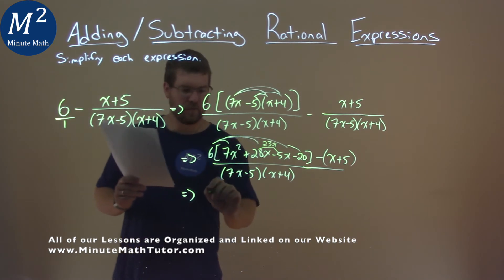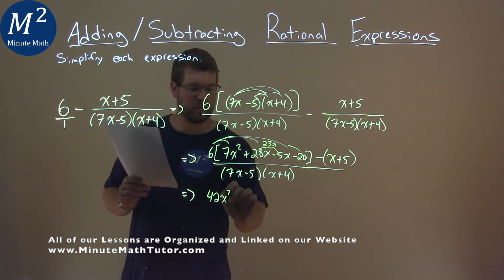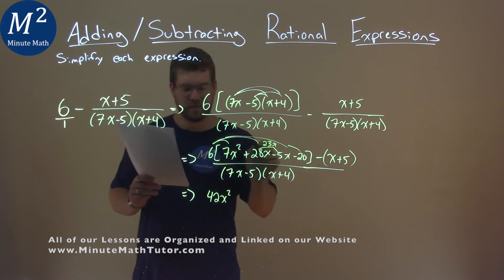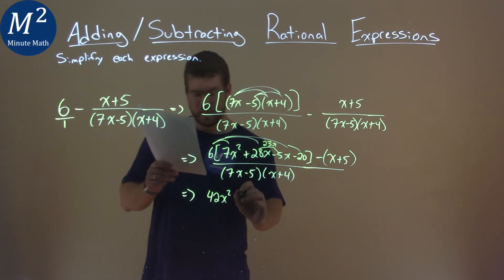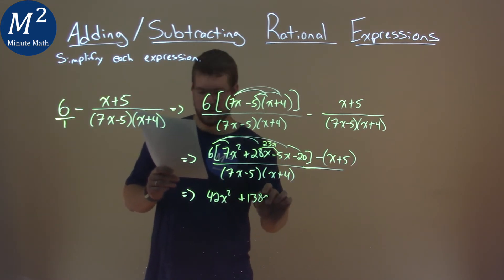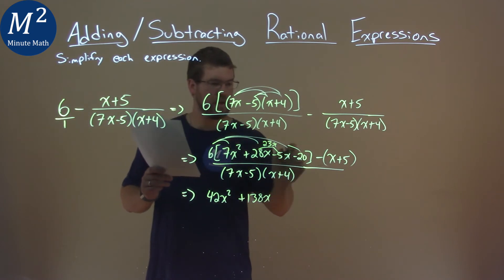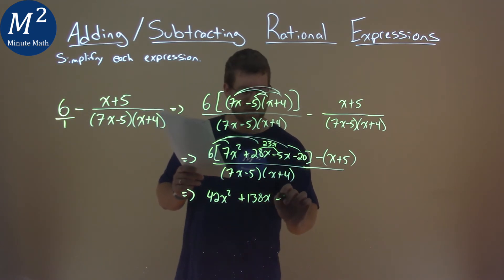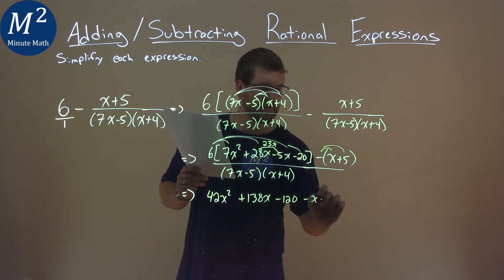So 6 times 7x squared is 42x squared, 6 times 23x is 138x, then 6 times negative 20 is negative 120. Then we still subtract that x, distribute that out, and subtract 5.